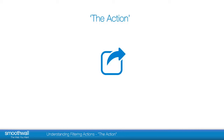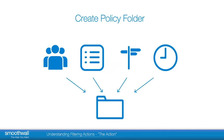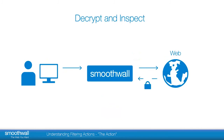HTTPS actions allow you to do one of four things. Create policy folder for creating a policy template to use later. Decrypt and inspect decrypts the site traffic so that it can be filtered in the same way and using the same rules you would choose for a normal website. This is useful when you need to inspect the full URL — for example, don't block Google but do block google.com/games — and it's useful to be able to extract search terms.